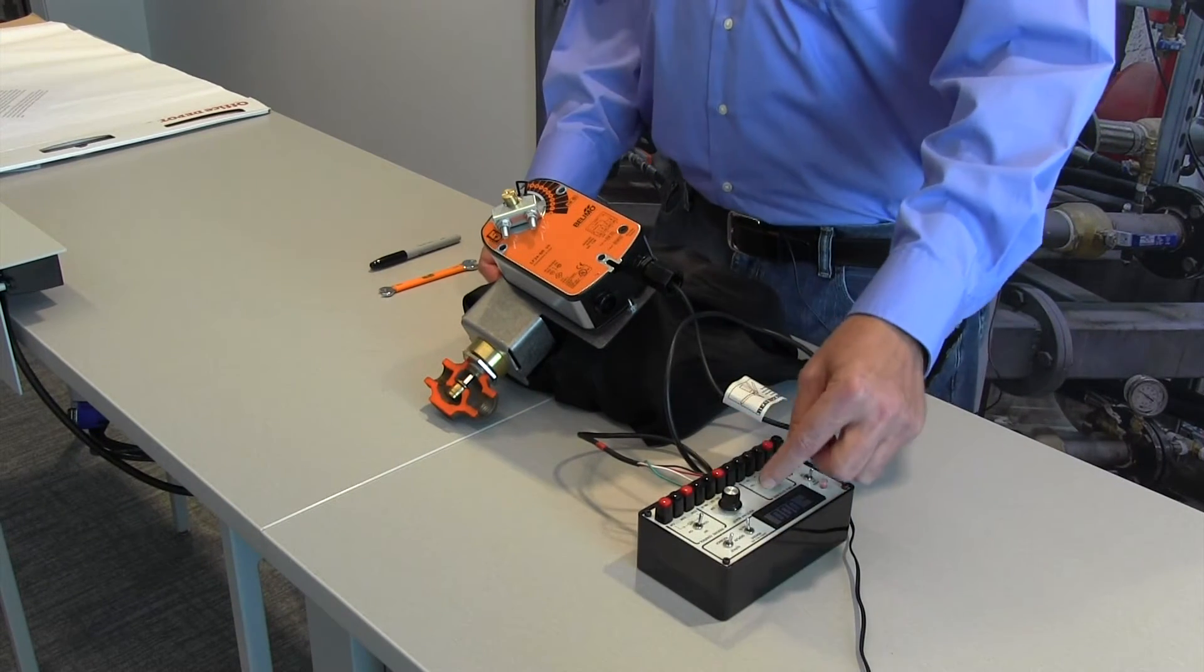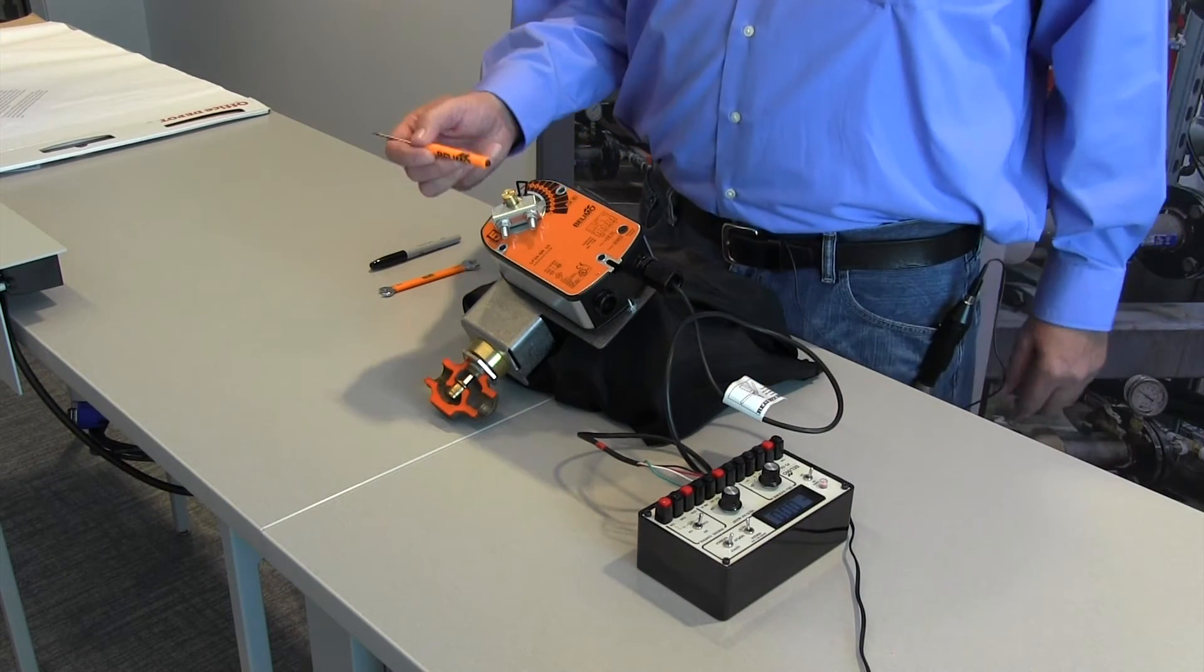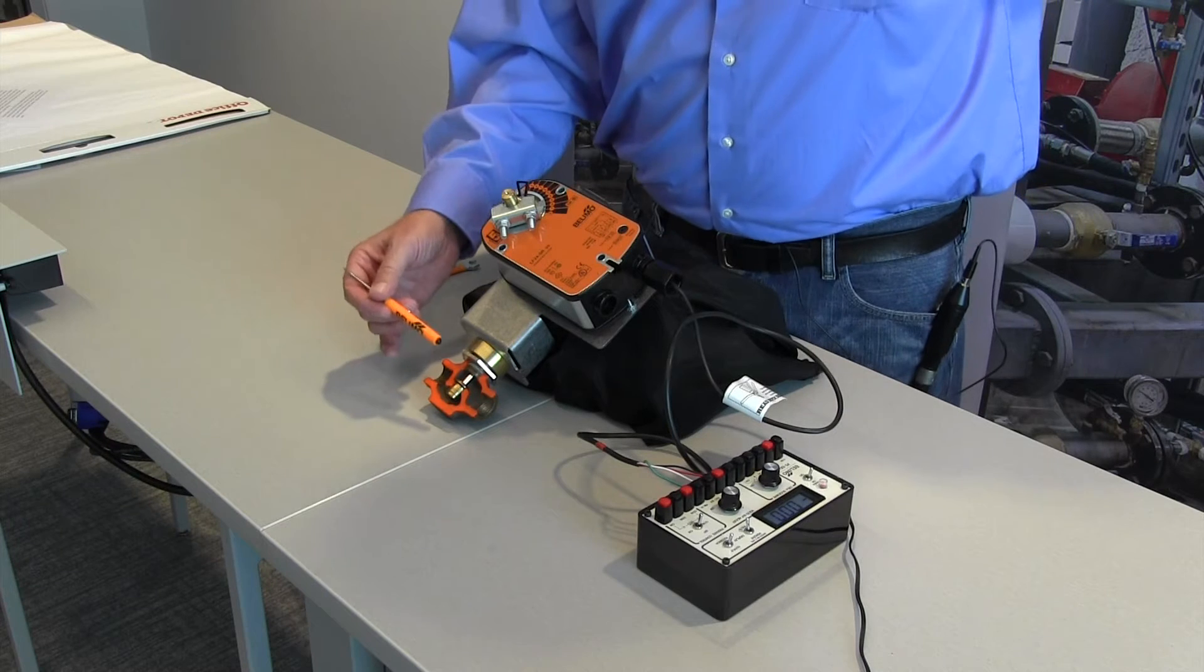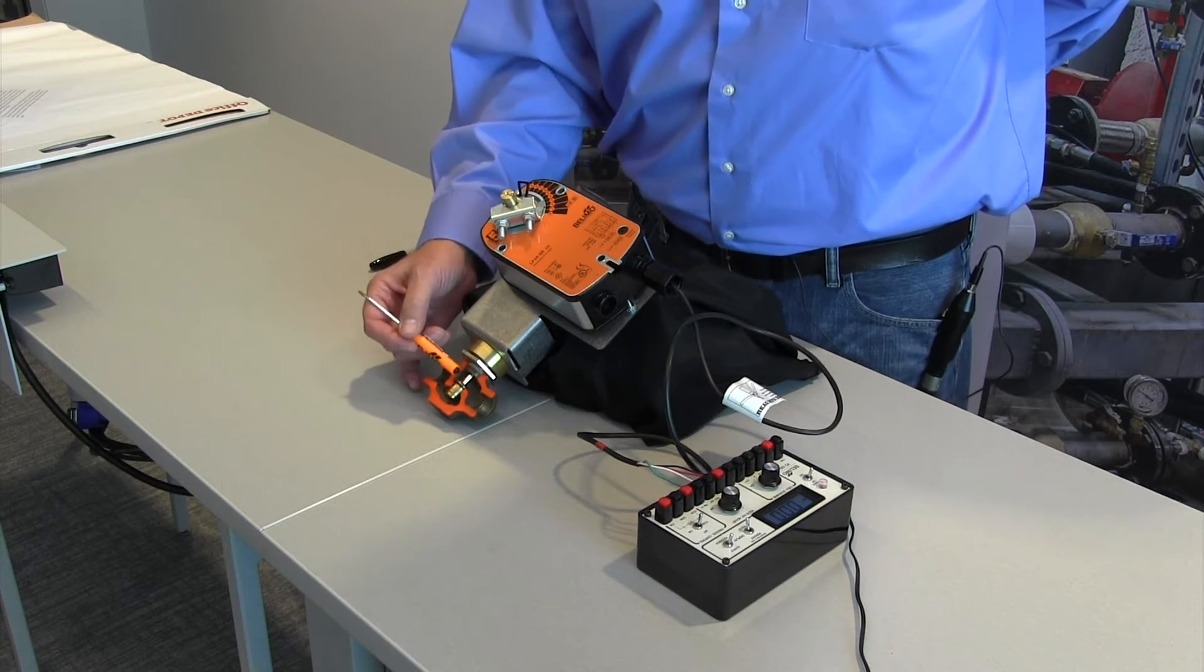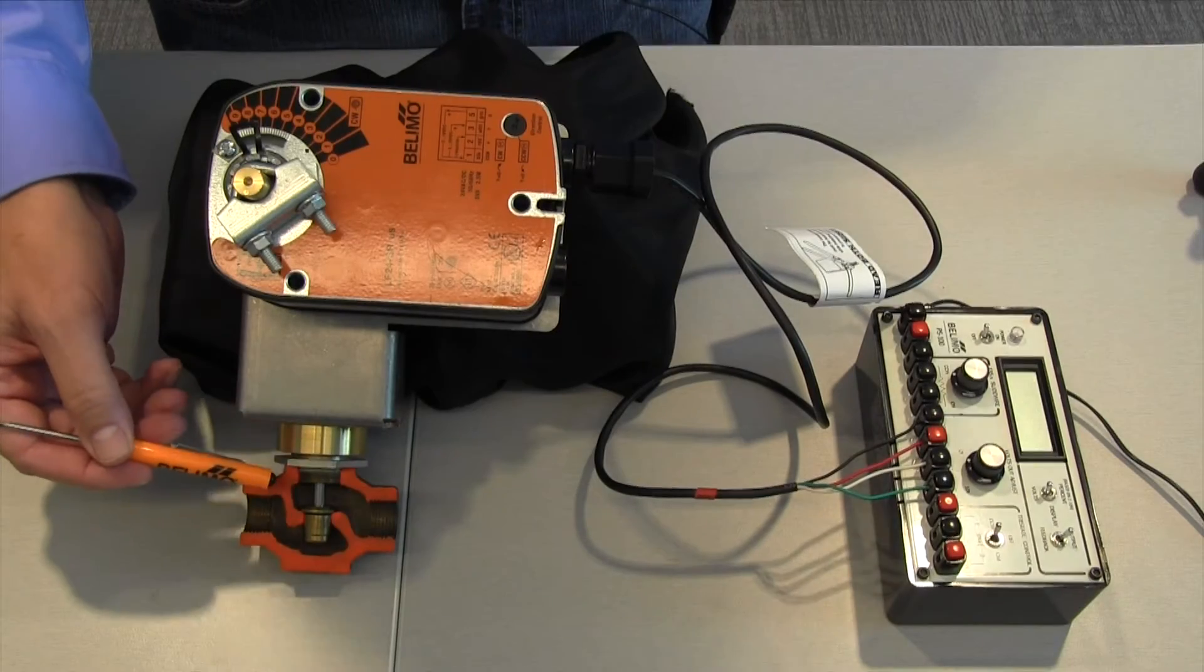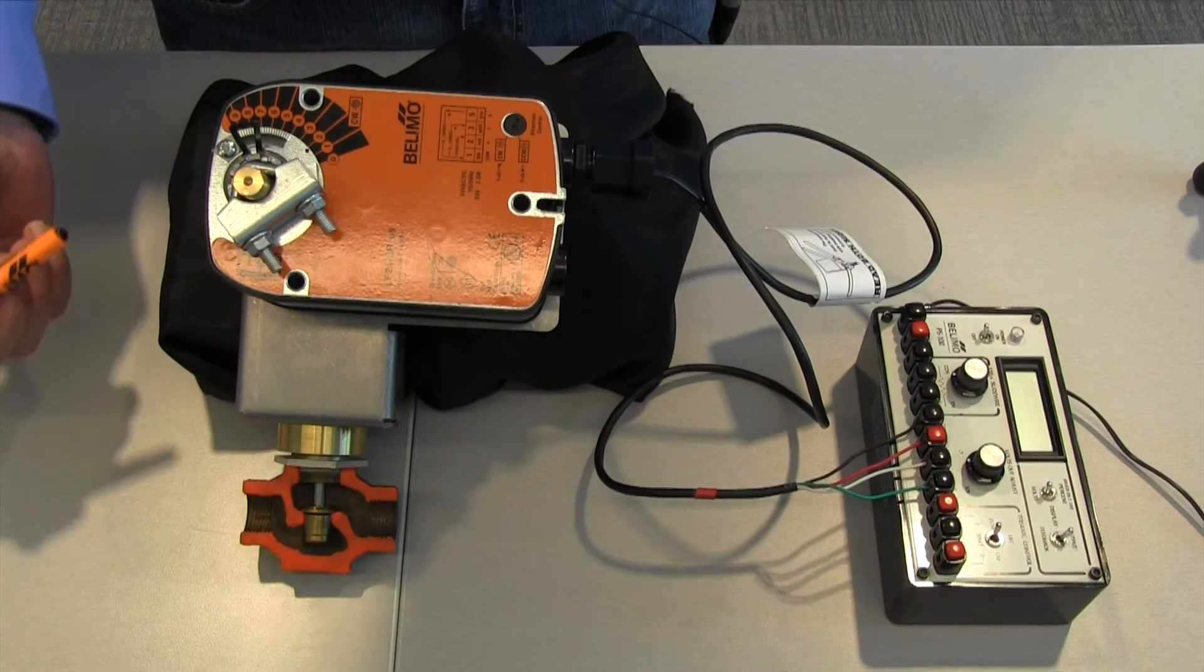I'm going to go to zero on my signal control. The actuator is going to begin to close and now what's happening is the actuator is putting steady constant pressure on the valve seat. You're getting much better close off.